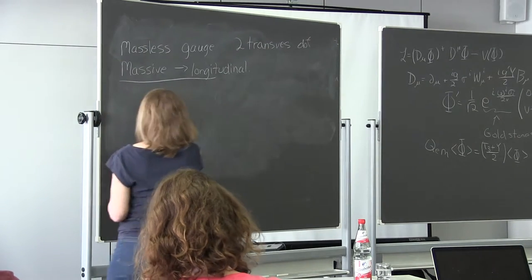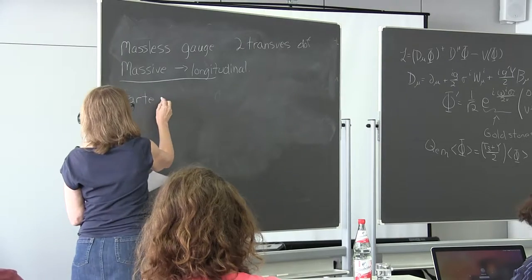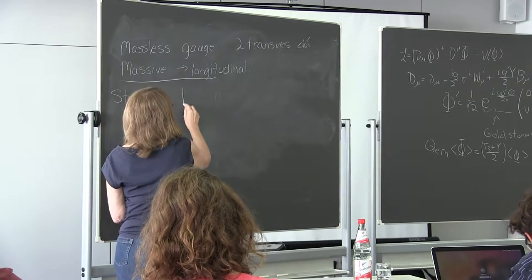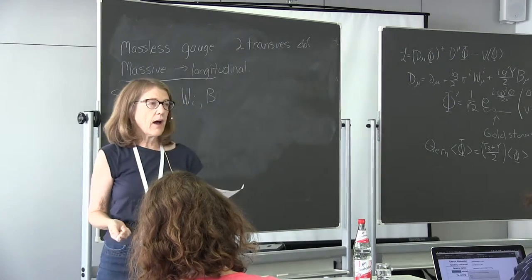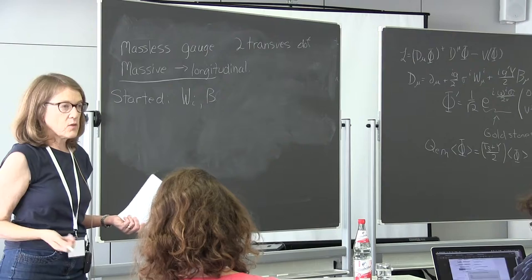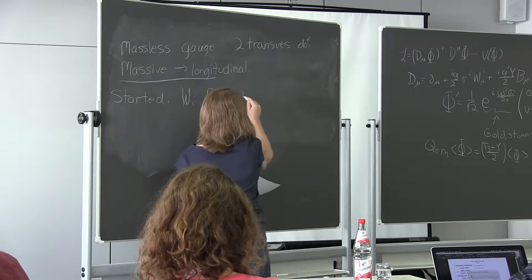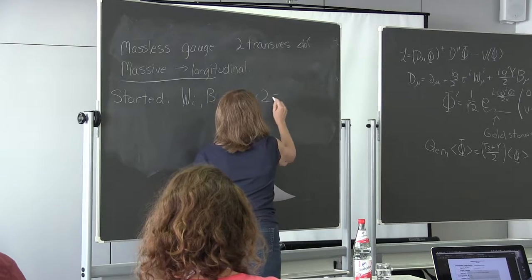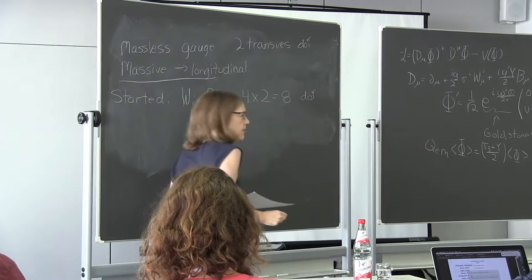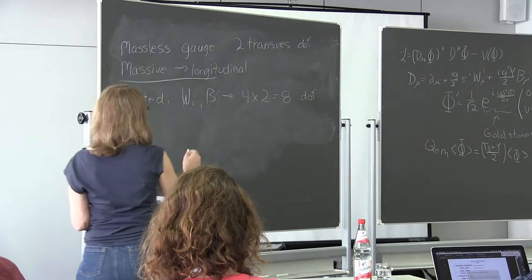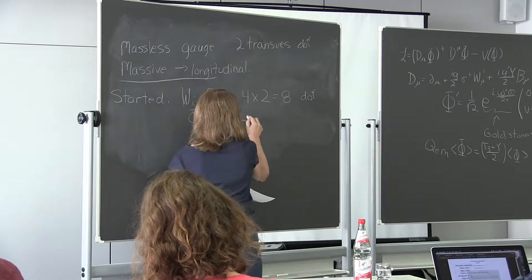When we started, we had the three SU(2) gauge bosons W^i and one U(1) gauge boson B — four massless gauge bosons, so 4 × 2 = 8 degrees of freedom. We had a complex scalar field φ with four degrees of freedom. Total: 12 degrees of freedom.